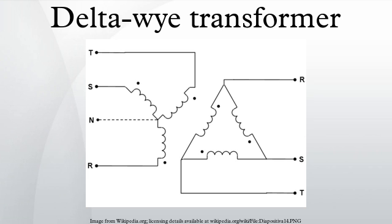The delta winding allows third harmonic currents to circulate within the transformer and prevents third harmonic currents from flowing in the supply line.